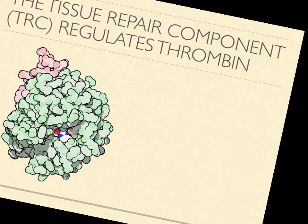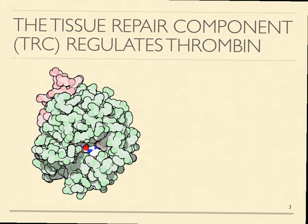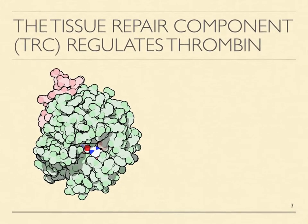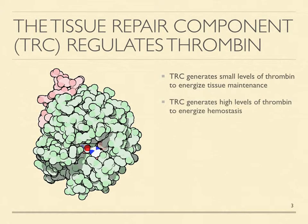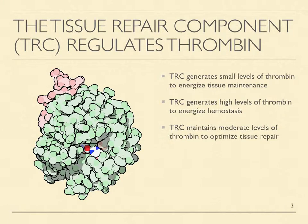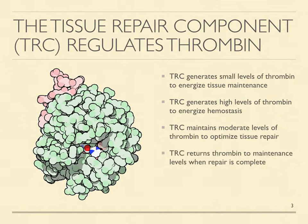Thrombin energizes all the cell and extracellular enzyme activities involved in tissue repair, including platelet activation, hemostasis, inflammation, chemotaxis, mitosis, metabolism, hypertrophy, angiogenesis, immune activity, and replacement tissue production.